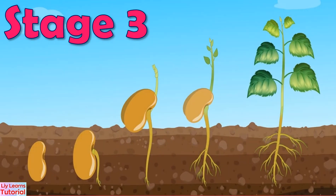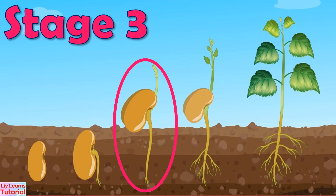Stage 3: Slowly, the roots grow longer. Then, the baby plant will start to search for sunlight. So, it pops out above the soil.